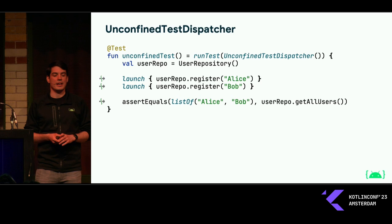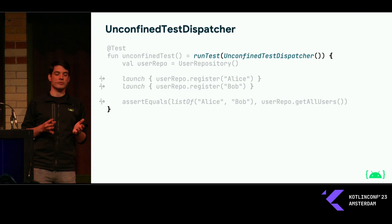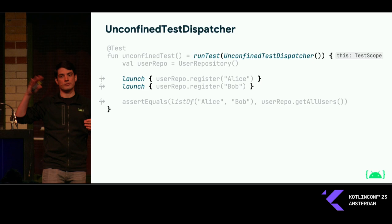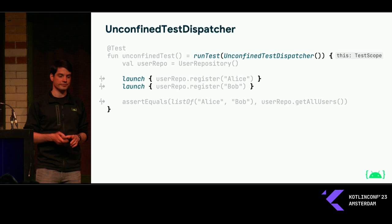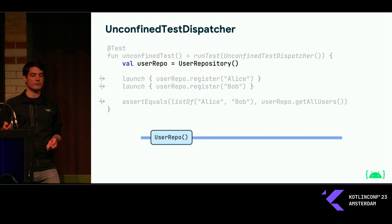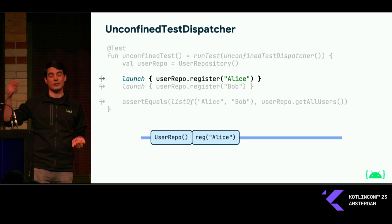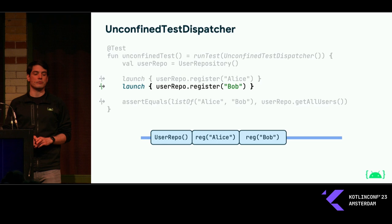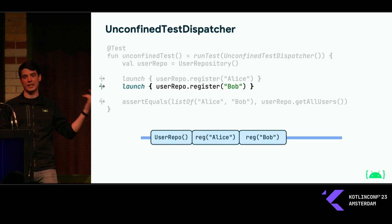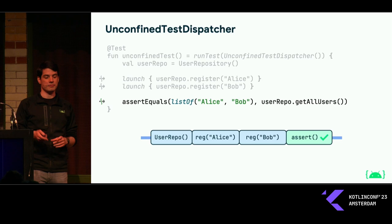We can try out this dispatcher in the existing test. To make runTest use it, we create an instance and pass it in as a parameter to runTest — it will be placed in the TestScope instead of creating a new TestDispatcher. Our two launch calls will now inherit that dispatcher from the scope. Let's see how this executes: we create a repository, then get to the first launch call which, because it's on an UnconfinedTestDispatcher, is entered eagerly. We immediately register Alice within the call to launch, and only then does launch return. Then we launch again, enter eagerly, register Bob, launch returns, and we get to the assertion, which is now successful.